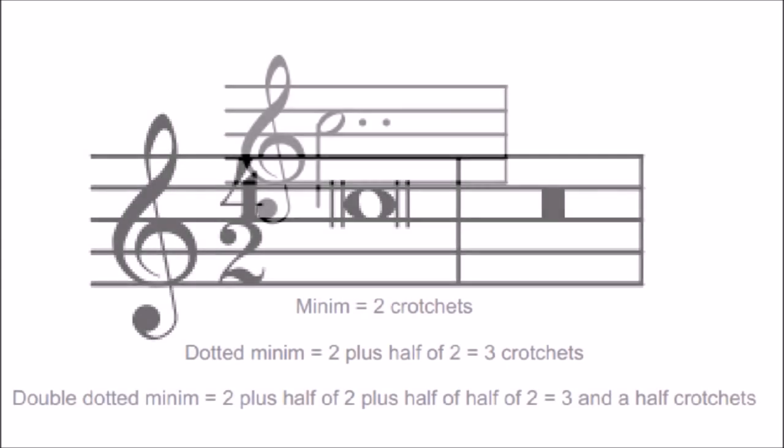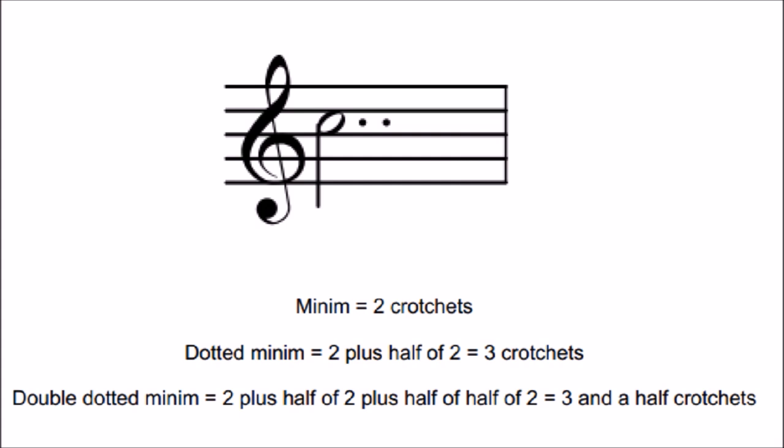Dotted notes are worth half as much again as the original note. Double dotting is where there is another half of the half added on. For example, a minim is worth 2 crotchets. A dotted minim is worth 2 plus half of 2, which is 3 crotchets.